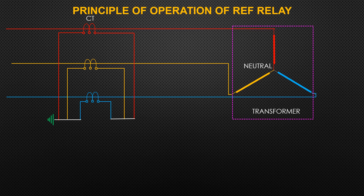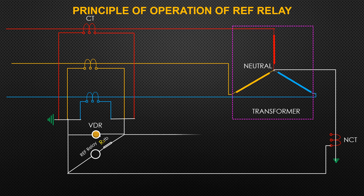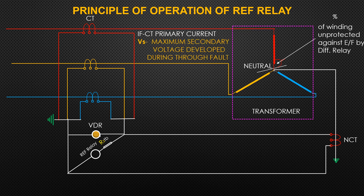Saturation of CTs makes the situation a little more complicated. The stabilizing resistor guarantees that the relay will not trip during a through fault. The VDR (voltage dependent resistor) feature is to protect CTs and windings by limiting voltage during heavy inside faults.